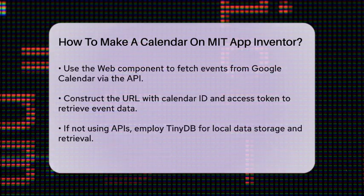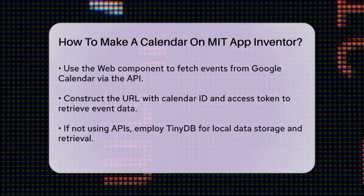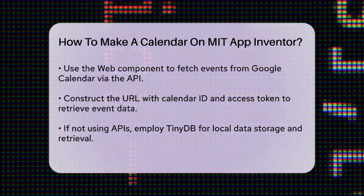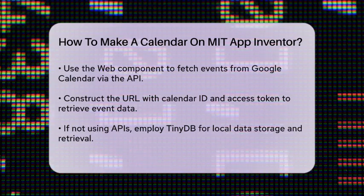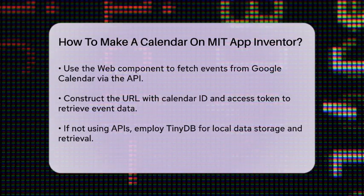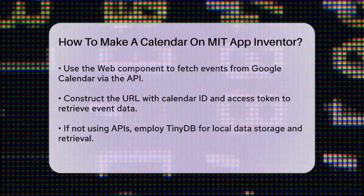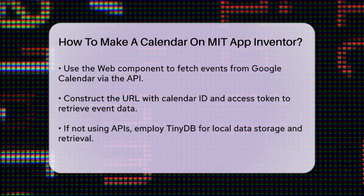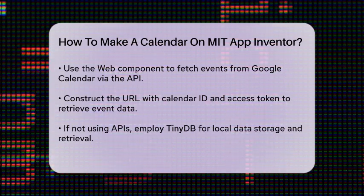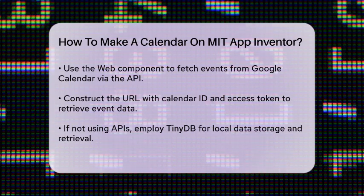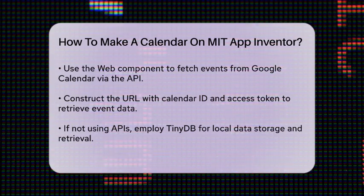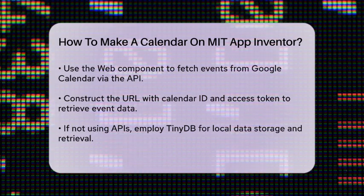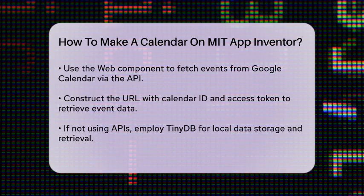If you're creating a local calendar without API integration, you can use TinyDB to store and retrieve data. For instance, you can store to-do items or events with dates as tags and retrieve them based on the selected date. You can use lists and dictionaries to store multiple events per day, making it easier to manage and display the data.